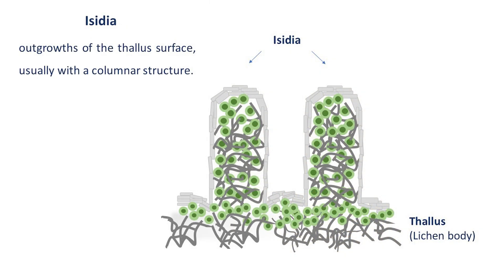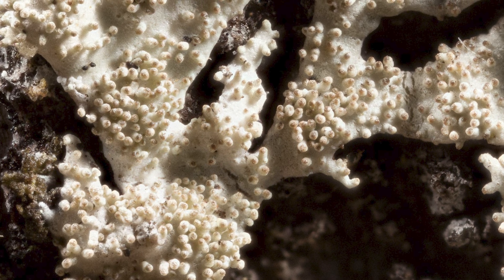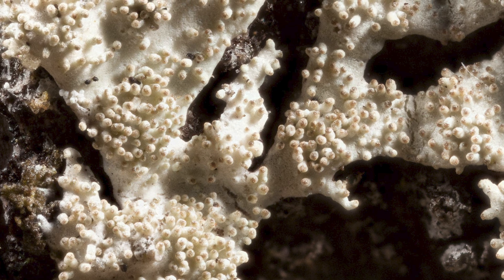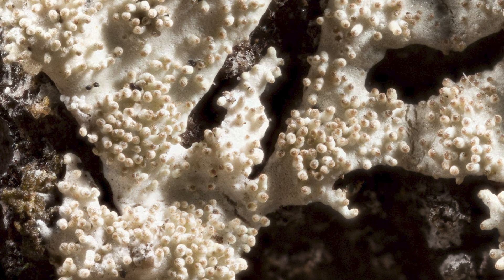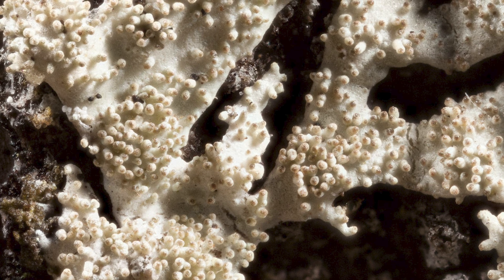Isidia are minor outgrowths emerging from the surface of the lichen thallus, typically measuring between 50 micrometers and about 1 mm in length. Usually, isidia have a columnar structure and are composed of both fungal hyphae and photobiont cells. Their presence often gives the thallus a distinctive fuzzy appearance, especially in areas where they are densely packed, creating a clear contrast with isidium-free regions that appear smoother and more defined.